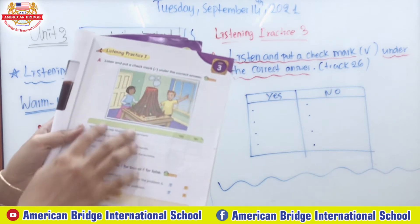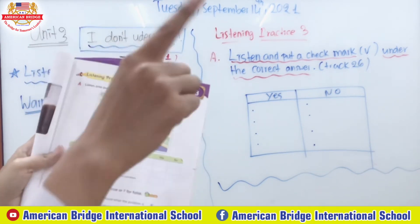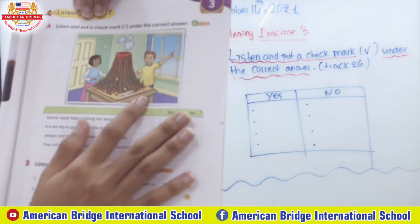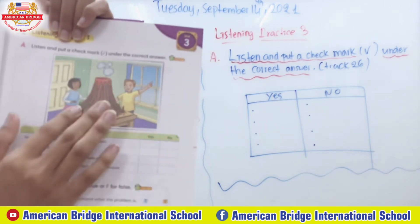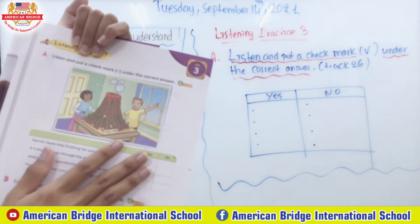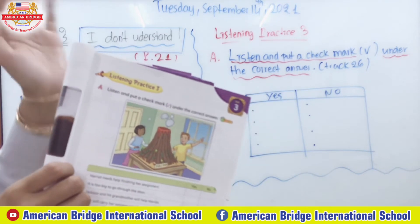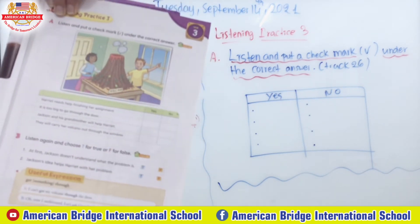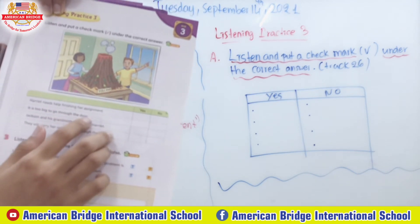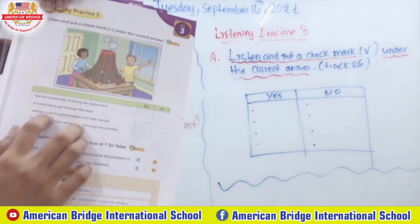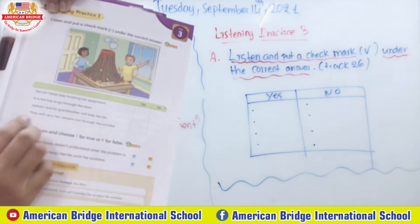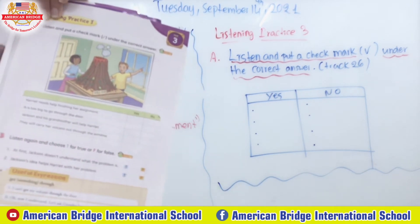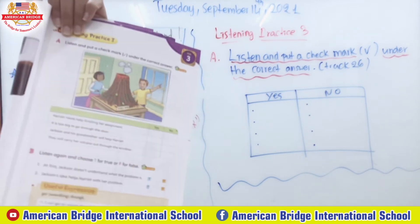Everyone, open your book to page 21. Listening practice three: listen and put a check mark under the correct answer, track 26. You can look at the picture first. There appear to be two people discussing a problem — possibly related to an assignment, maybe involving a volcano. There are four statements to evaluate. Number one: Harriet needs help finishing her assignment — yes or no. Number two: it is too big to go through the door — yes or no. Number three: Jackson and his grandmother will have parrots — yes or no. Number four: they will carry her volcano out through the window — yes or no.